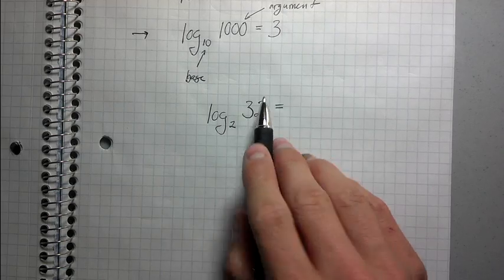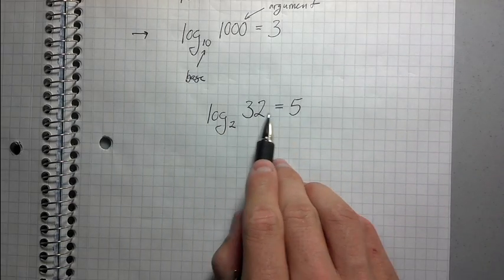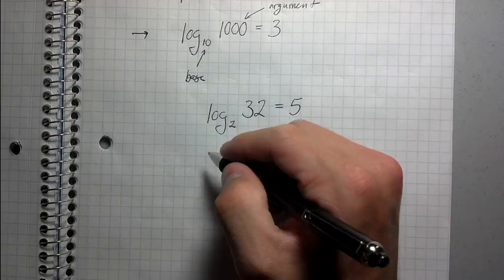Oh, look, this is 32, so I know that this log base 2 of 32 equals 5. Does that make sense? I'll give another example.